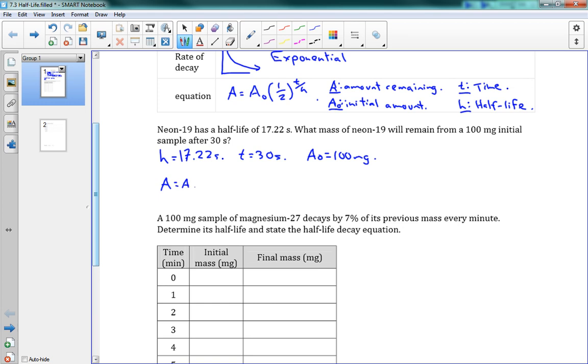Then we can use our equation, A is equal to A naught times one half to the T over H. And we'll fill in our numbers here. I'm going to leave things as milligrams. Usually I recommend putting them into their proper units, in this case it would be kilograms, but if we keep things in milligrams, it's going to work out just fine here. Our time is 30, I'm dividing by 17.22. And this gives us a final answer of 29.9 or 30 milligrams. So we started with 100 milligrams. After 30 seconds we're down to 30 milligrams.